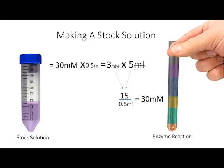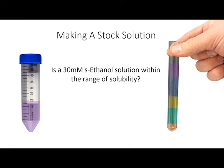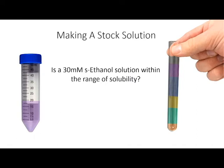The next thing to do is ask yourself, is a 30 millimolar ethanol solution within its range of solubility? If you're not sure, look it up. This is important, because you don't want to spend time trying to make a solution that's impossible to make. If you're beyond solubility, you'll need to adjust the V1 in your equation so that you're adding more volume of a less concentrated stock.